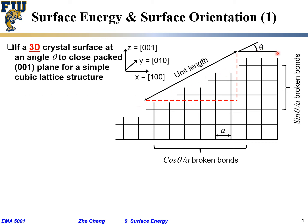Assume our exposed surface is actually at an angle theta away from the base (0,0,1) plane. So this is the [0,0,1] z-direction — the (0,0,1) plane is just this horizontal plane. The actual surface is at an arbitrary angle theta away from this base (0,0,1) plane. How do we understand what would be the surface energy per area for such an oblique surface, at an angle away from a low index plane? We have a way to estimate.